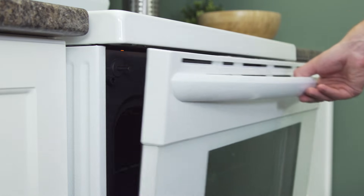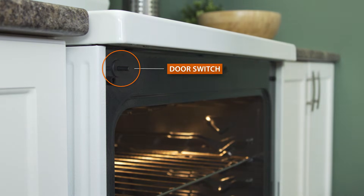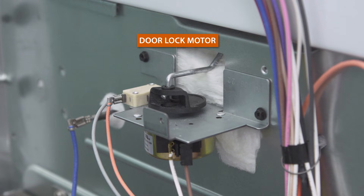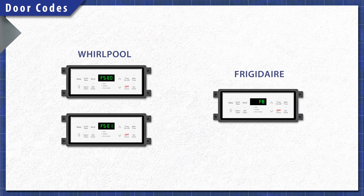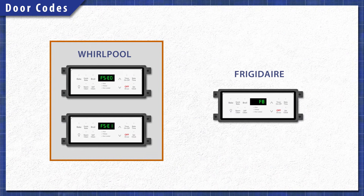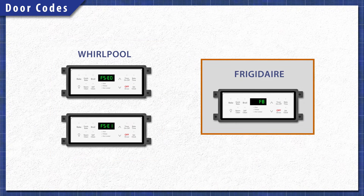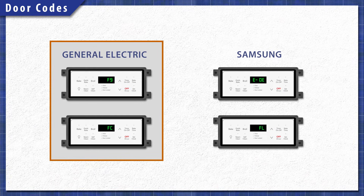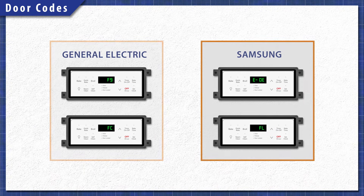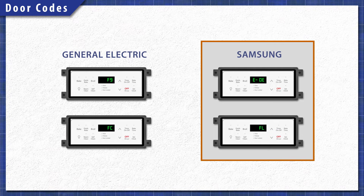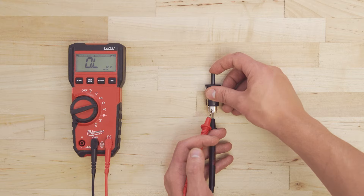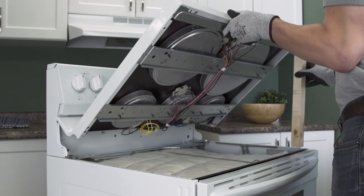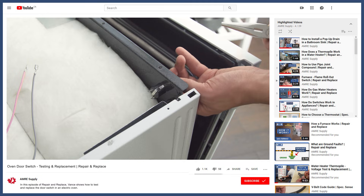A door error code means there is a problem with one of the switches, features, or the door lock motor. In Whirlpool models this will be an F5E0 or an F5E1 code. Frigidaire will display an F8 code, and Samsung will display an E0E or FL code. This switch can also be tested for continuity, which will likely require you to lift up or remove the cooktop. You can see how to do that in the video linked below.